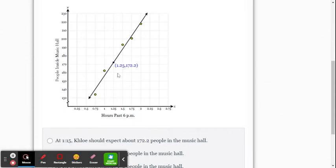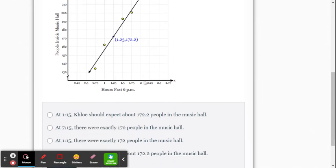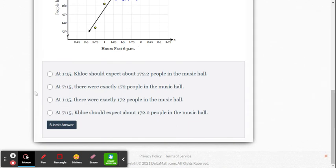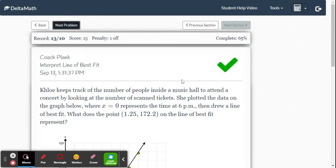So again, this is a prediction. It's not an actual person. It's not one of the yellow points there. That was the actual data. So this is just a prediction. So this would be at 7:15. 6 plus an hour and a quarter would be 7:15 PM. You expect 172.2 people in the music hall. Chloe would expect at 7:15, she would expect about that many people in there. All right. And let's go to this one.